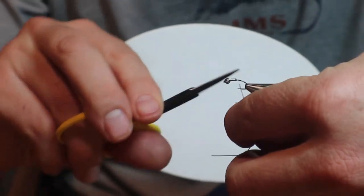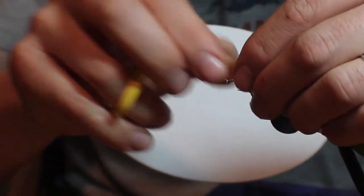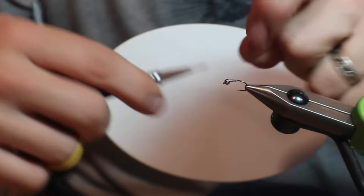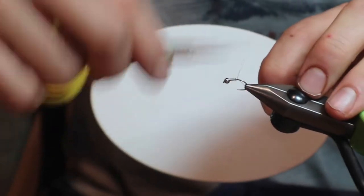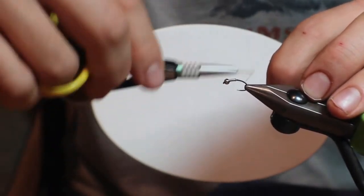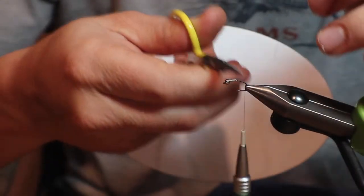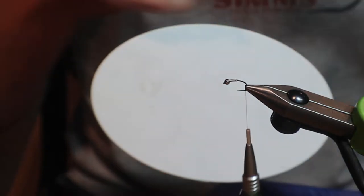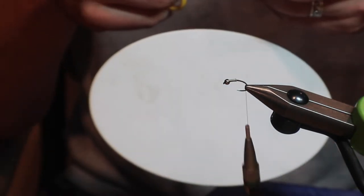Deer season just wrapped up, so at least for me, it's time to go fishing. I got material I want to try out called dirty bug yarn from Semper Fly, so I'm going to real quick whip up some nymphs.